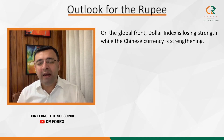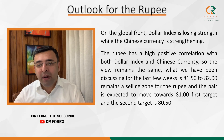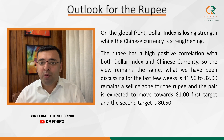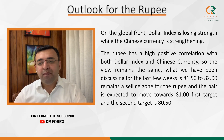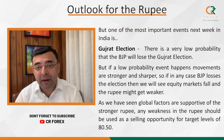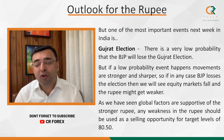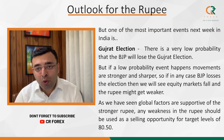On the global front, the dollar index is losing its strength and there is a higher probability that the Chinese currency can also appreciate towards 6.70. Rupee has a positive correlation with both factors — dollar index and Chinese currency. So the view remains the same as we have been discussing over the last couple of weeks: any uptick towards 81.50 to 82 level should be taken as an opportunity to sell, with a first target of 81 and second target of 80.50. The most important event next week in India is Gujarat election results. There is very low probability that BJP will lose, but if that happens, we can see a sharp fall in equity markets and rupee might get weaker. However, global factors are not supporting a weaker rupee.